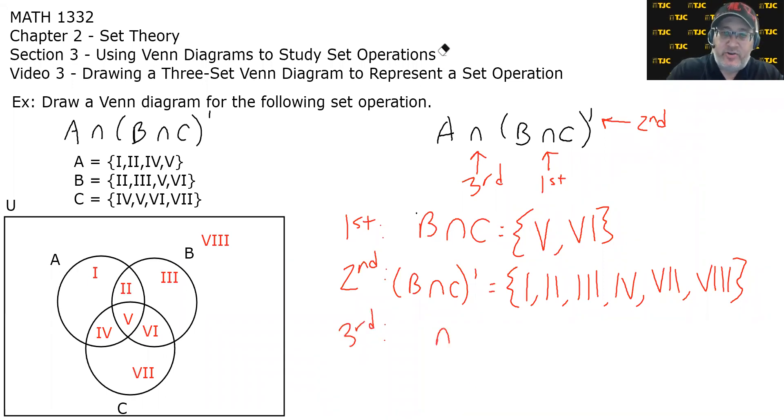And for our third and final move, we have to take an intersection of the thing to the left of the intersection, which is set A, and the thing to the right, which is the parentheses. So which sets do we need to find the intersection of? Well, set A, which is right here, and the complement of B intersect C, which is what we just found. So looking at those two sets, what do they have in common?